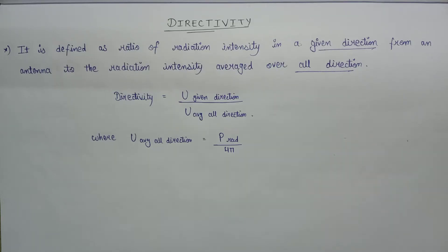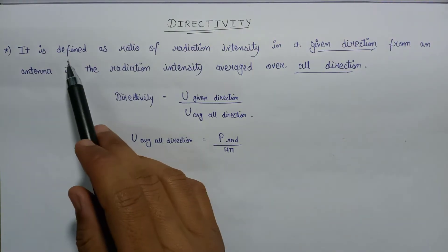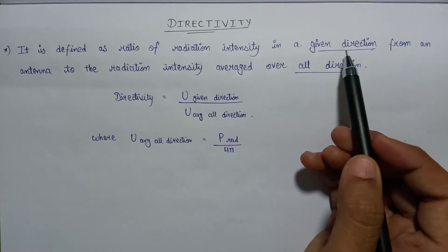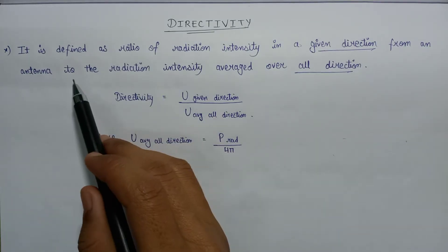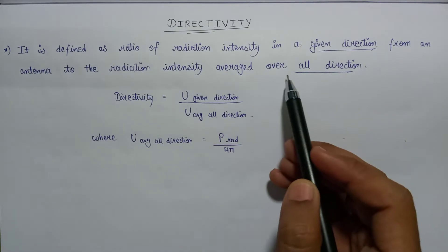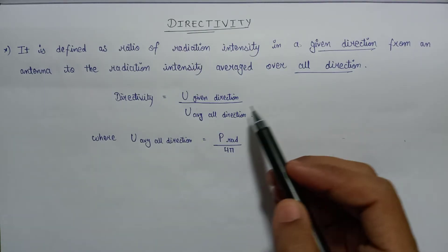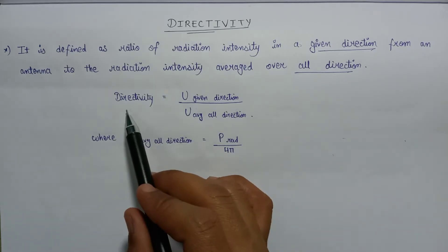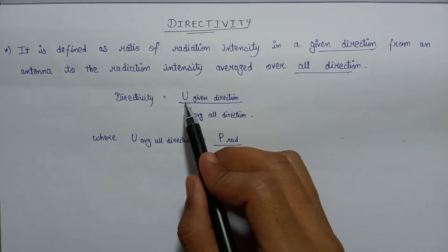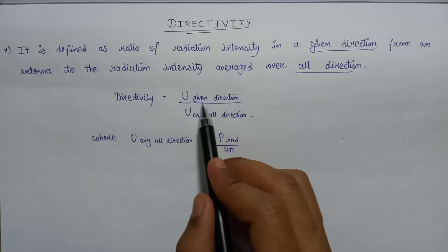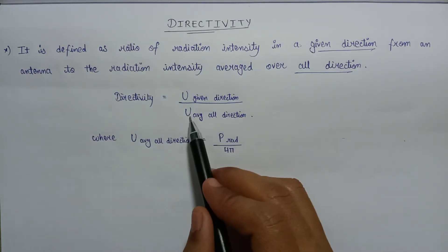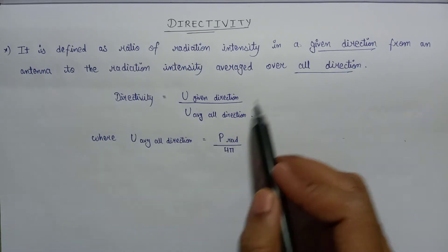In this lecture we are going to study about directivity. Directivity is defined as the ratio of radiation intensity in a given direction from an antenna to the radiation intensity averaged over all directions. The symbolic representation for directivity is given as radiation intensity, denoted by U in the given direction, to the radiation intensity averaged over all directions.